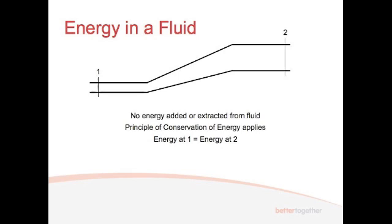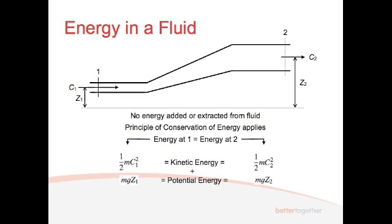We have the energy at point 1 equals the energy at point 2. And so what's the energy at point 1? Well, first off, we've got kinetic energy, which we know is one-half mc squared. So this is mc squared at point 1, and we've got mc squared at point 2. We've then got the potential energy at point 1 and 2, which is mgz1 and mgz2. And so here we've got z1 as the height and z2 as the height. We've got c1 and c2 as our input and exit velocities.